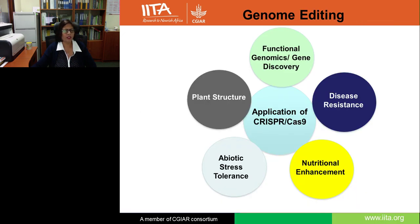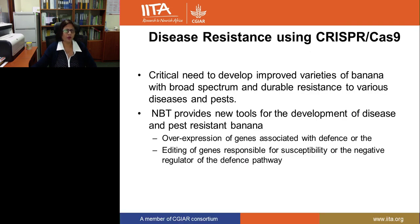After establishing the genome editing system, we are currently applying it for developing disease resistance and also for gene discovery. This technology can also be used for other traits like nutritional enhancement and abiotic stress tolerance. We are focusing on disease resistance because there is a critical need to develop improved banana varieties with broad-spectrum and durable resistance to rare diseases and pests. The new breeding technology like CRISPR-Cas9-based genome editing can work by overexpressing genes associated with defense or editing genes responsible for susceptibility in the defense pathway.